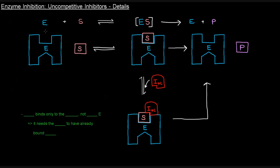With uncompetitive inhibitors, where exactly do they bind? I'm not exactly sure about the precise location, but what I do know is what they bind to. The substrate binds the active site and forms the enzyme-substrate complex. The uncompetitive inhibitor (IUC) binds only to the enzyme-substrate complex — it does not bind to free enzyme. It needs a substrate to have already bound the enzyme.